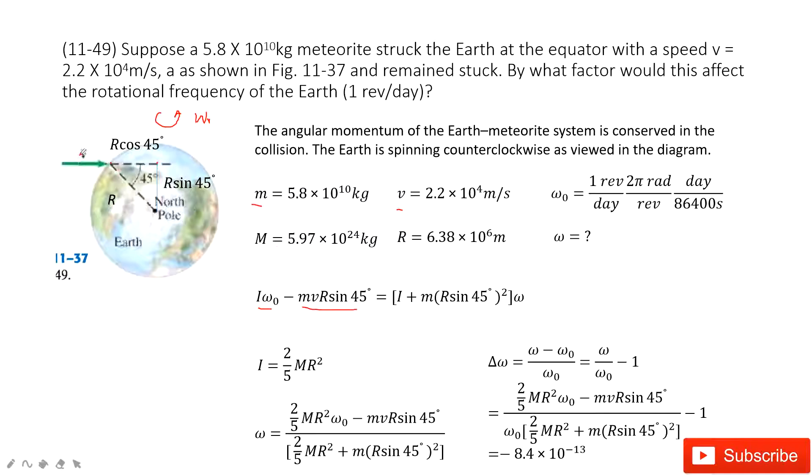You can see the object is R p. This is R. R sine 45 degrees, this is R. And then M times v is the p, momentum. So R p is the angular momentum for this object.